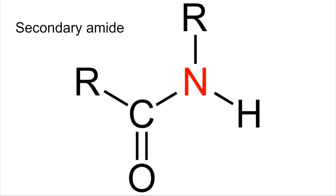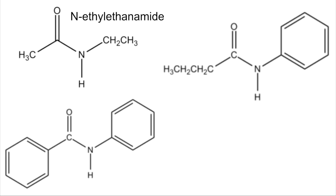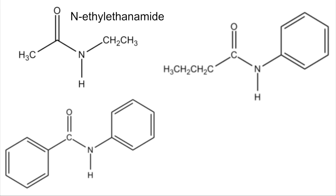For secondary amides, on the N we've got a carbon group and a hydrogen. I've done one for you to explain the naming. Think about this part as a carboxylic acid — this would be ethanoic acid, giving the ethanamide part. Then on the N we've got an ethyl group bonded, so we call it N-ethyl ethanamide. Have a go at the other two.